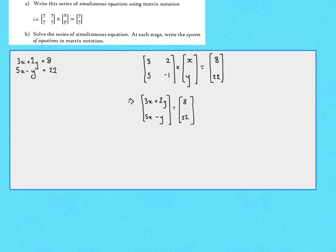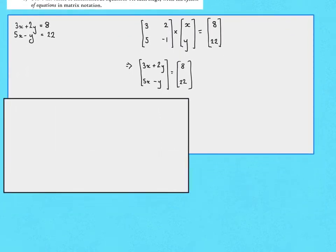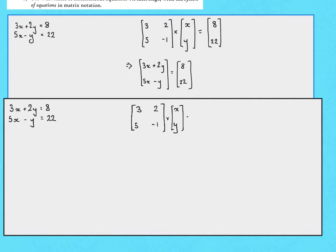In part b, we're asked to solve these two simultaneous equations. Let's write them out in full again: 3x + 2y = 8, and 5x - y = 22. And in matrix form: [3, 2; 5, -1] times [x; y] equals [8; 22].